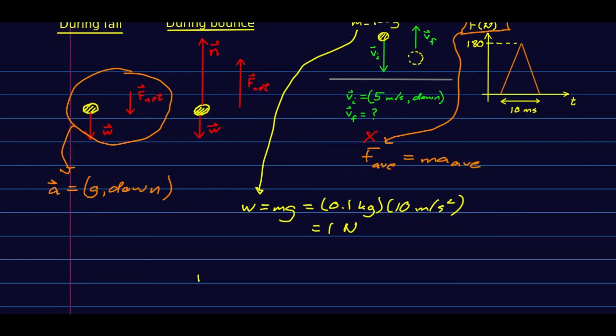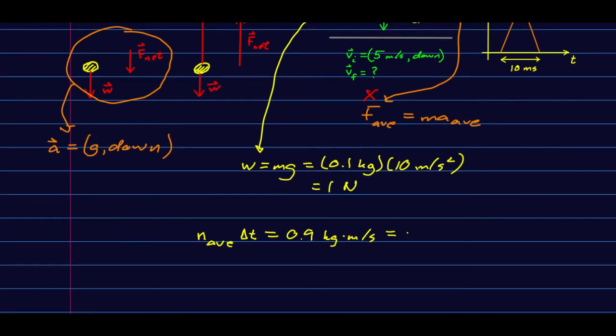Let's just look at the average normal force. That equals the area under the curve. So n_av delta t is J, which we found was 0.9 kilogram meters per second. So n_av, the average normal force, was 0.9 kilogram meters per second over delta t, which was 0.01 seconds. That's 90 newtons.